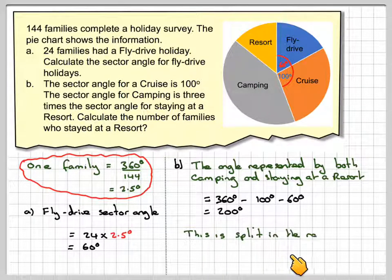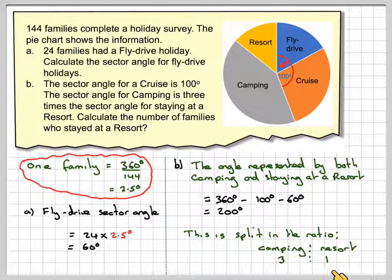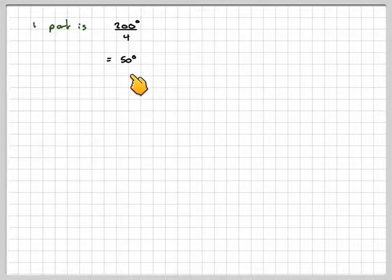This is split in the ratio of camping to resort, which is 3 to 1. Therefore, there are four parts in this ratio, so one part will be 200 divided by 4, which is 50 degrees.